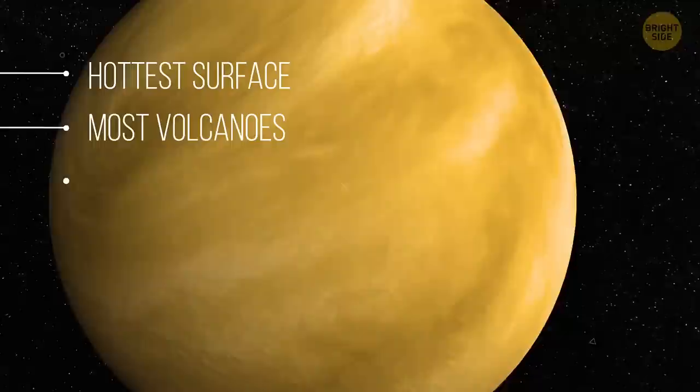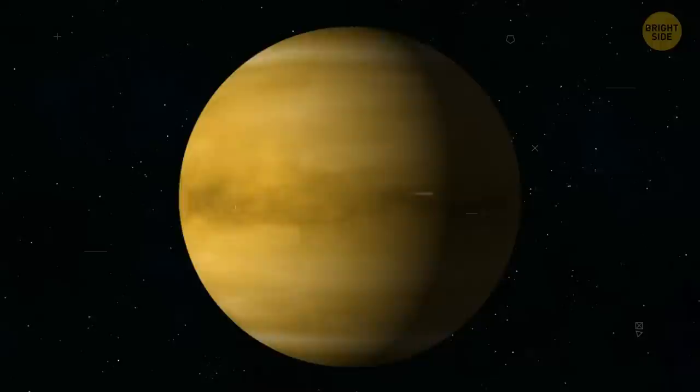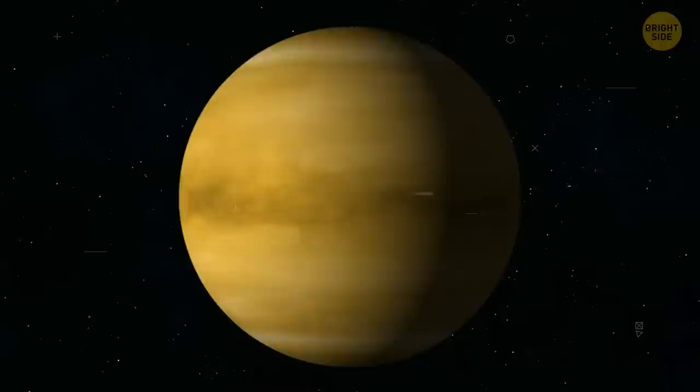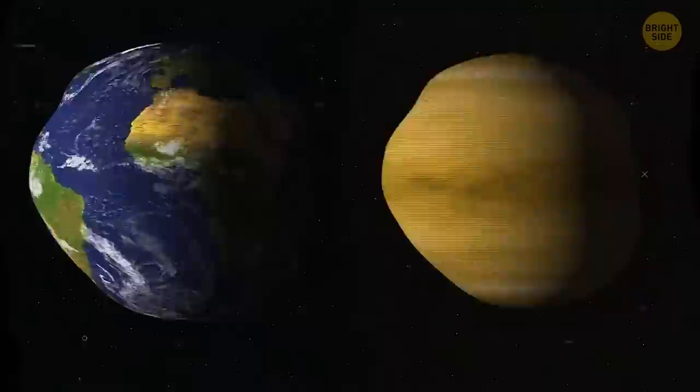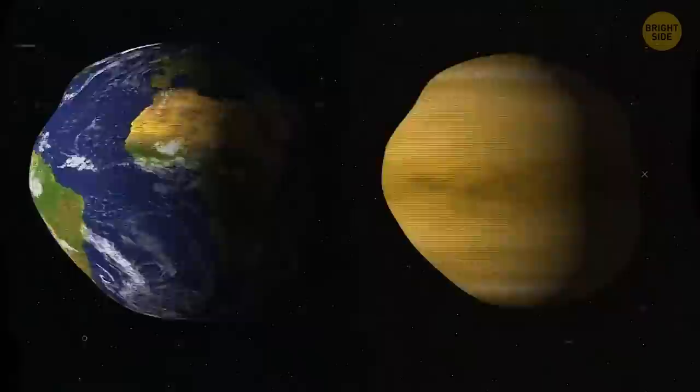Venus is a planet of extremes. The hottest surface, the most volcanoes, the brightest planet, and the closest one to Earth. It's also the slowest spinning, it barely rotates. Making a day on Venus last 243 Earth days. You could literally walk faster before the planet makes a complete turn. Venus also rotates in the opposite direction that Earth does, so sunrises are in the west, and the Sun sets in the east.